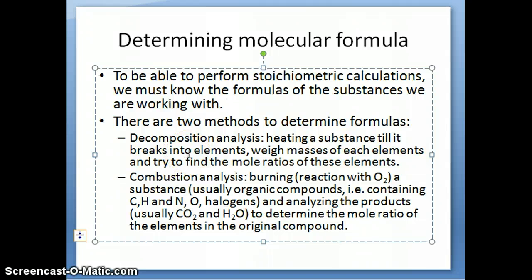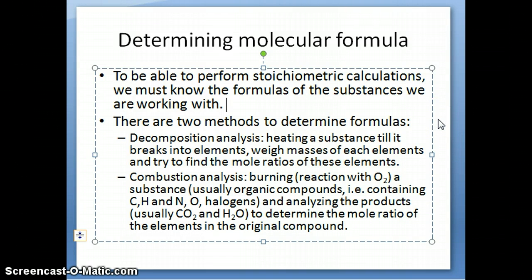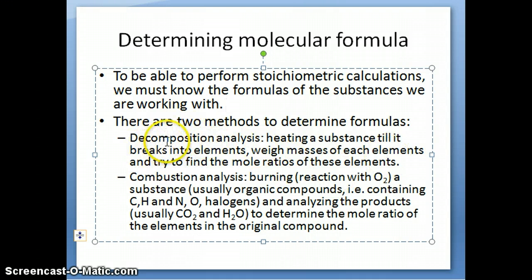If you go back to the previous chapter — Chapter 2 — when we talked about those studies by Lavoisier, Proust, and Dalton about how they figured out all these different laws before the proposal of the atomic theory, this is really the type of experiments they did. They decomposed many different substances and weighed the masses of the elements to figure out the proportion of elements in the compounds.